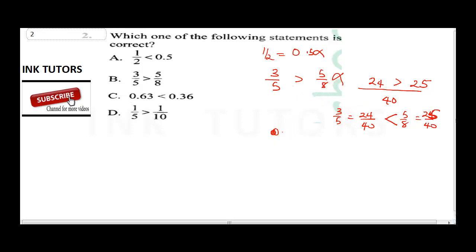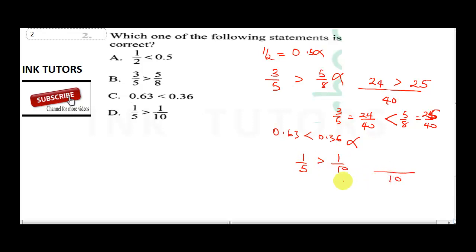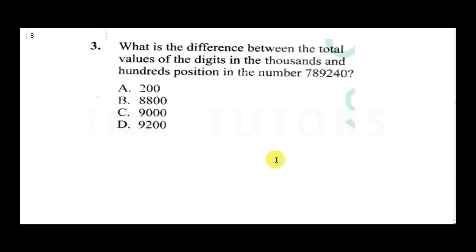Statement C says 0.63 is less than 0.36 — that's not true. The last option says one over five is greater than one over ten. Using LCM of 10: one-fifth equals 2/10 and one-tenth equals 1/10, so 2/10 is greater than 1/10. The correct answer is D.